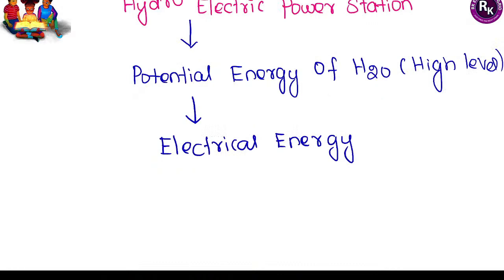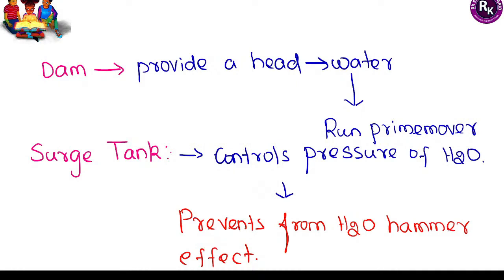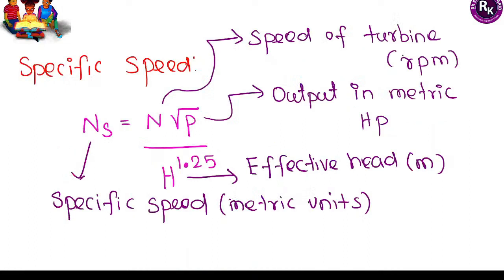The control rod materials are cadmium and boron, which act as neutron absorbers. In a hydroelectric power station, potential energy is converted into electrical energy by passing water from a very high level. Important components include a water reservoir to store water and run the prime mover. The dam stores water to run the prime mover and reduces pressure of water coming from the high level to prevent the water hammer effect.